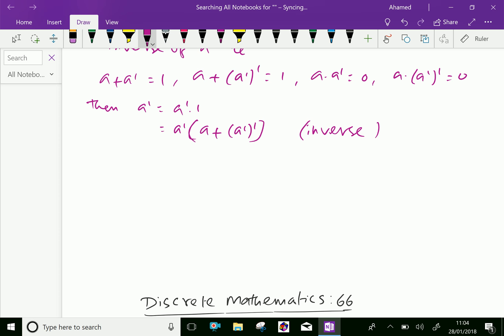Then we can write a' = (a' · a) + (a' · a''), by distributivity. We can write this as (a · a') + a' · a''.